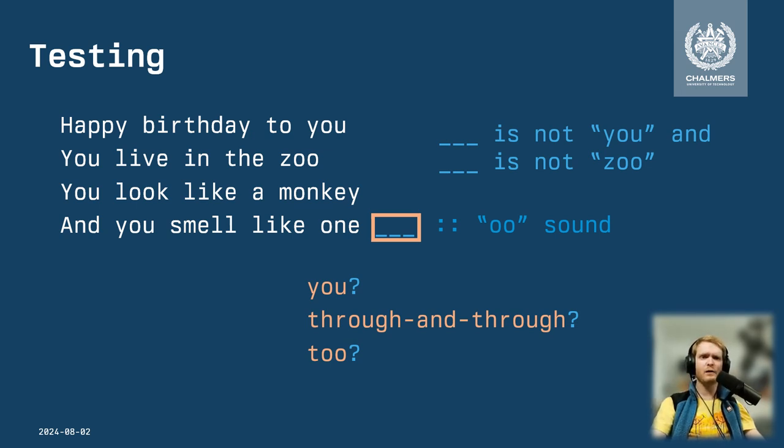Now we can eliminate 'U' — it doesn't match the test suite, so we can't use that word. What about 'through and through'?